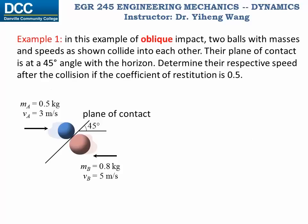Let's look at this example. Although the two particles are moving both horizontally, when they collide into each other, their plane of contact is at a 45 degree angle with the horizon. So in this case, there exists velocity component that is at an angle to the line of impact. And unlike the central impact that we introduced earlier, this is an example of oblique impact. And we need to determine the respective speeds after the collision of these two particles, and we know that the coefficient of restitution between them is 0.5.